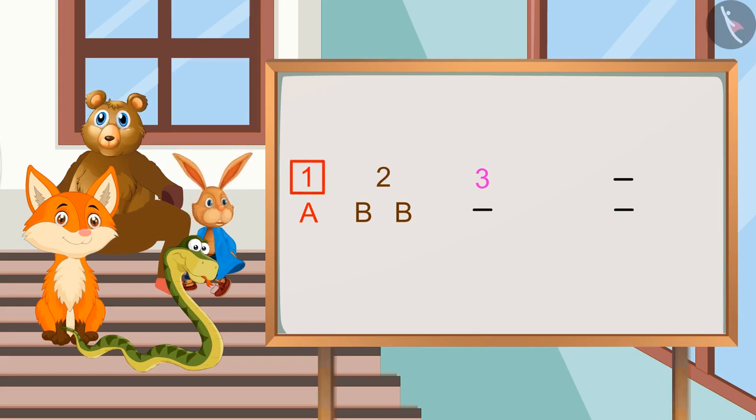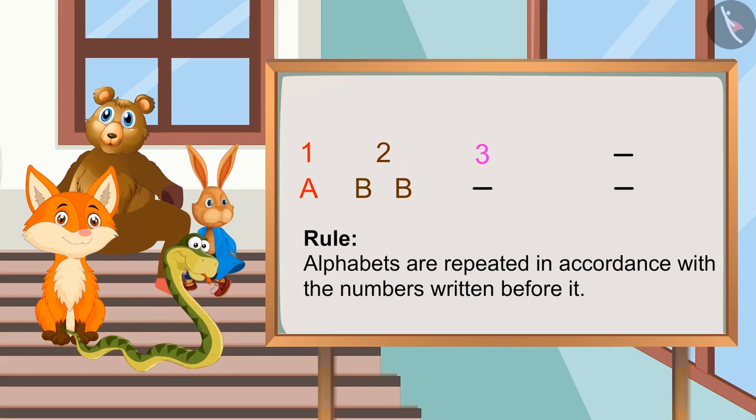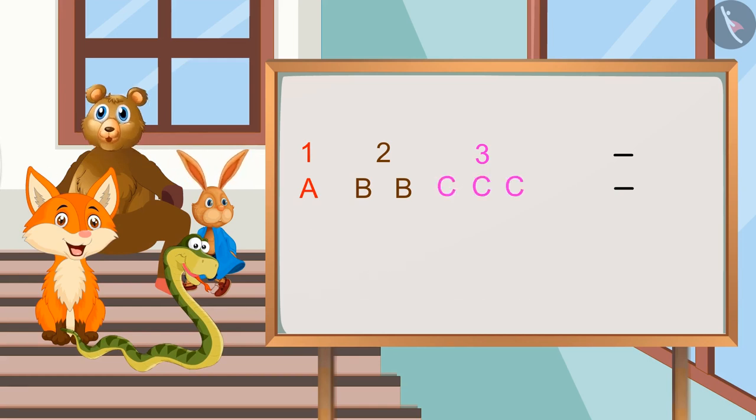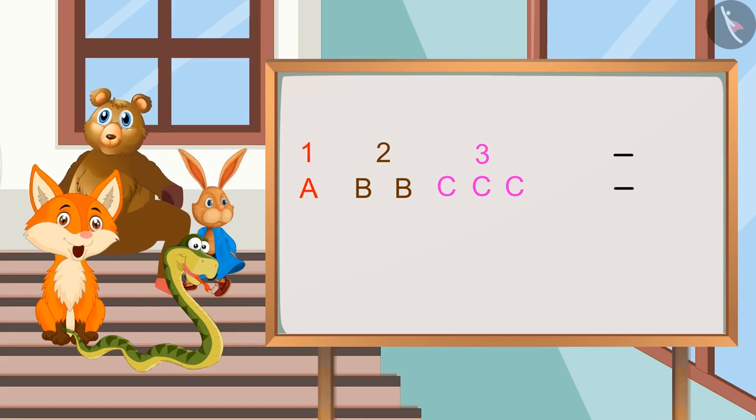First we have the number 1, then alphabet A for once. Then we have number 2 and alphabet B is written twice. So, the rule for this is, alphabets are repeated in accordance with the numbers written before it. Absolutely right, Kamini. So, according to this rule, in the first blank, we will write C for 3 times. Right.